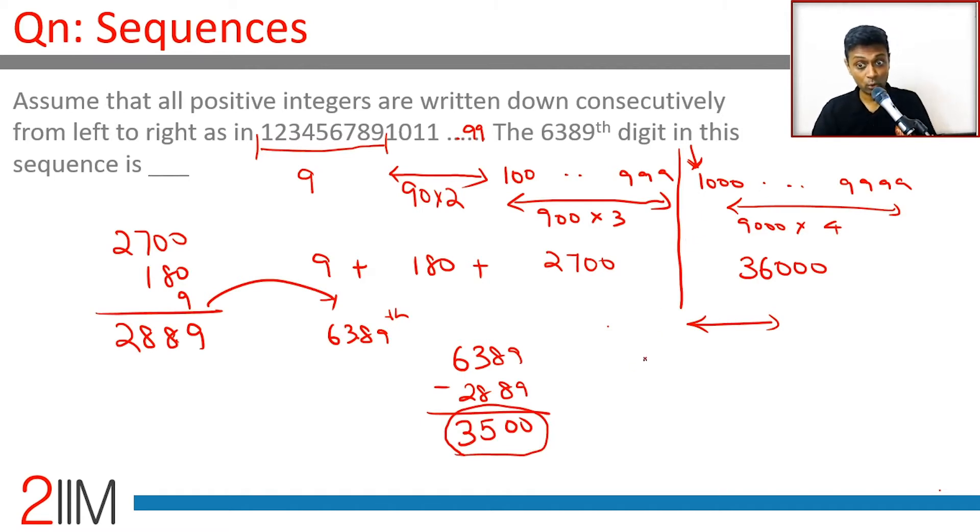Now we are thinking about 4-digit numbers. So how many 4-digit numbers can be accommodated? That will be 3500 by 4. The last digit of that final 4-digit number when we divide this, that's going to be your answer.